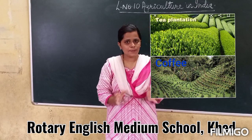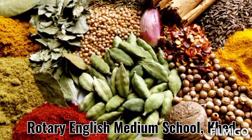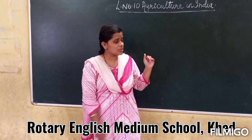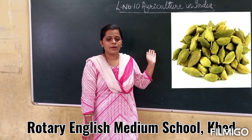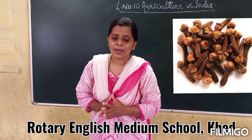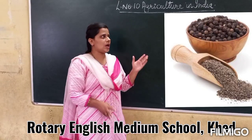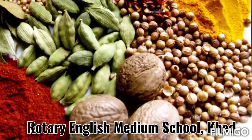Now let's talk about spices. Spices such as chili, turmeric, cardamom, cloves, and pepper — these are the spices. Spices are mostly grown in Kerala and Karnataka. India is very famous for its spices.